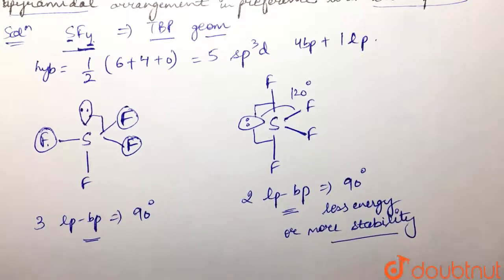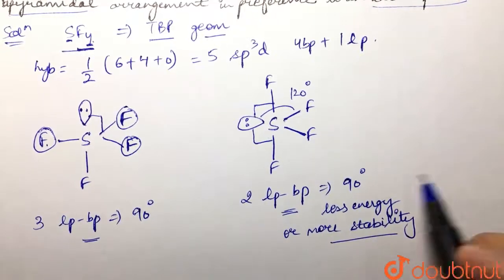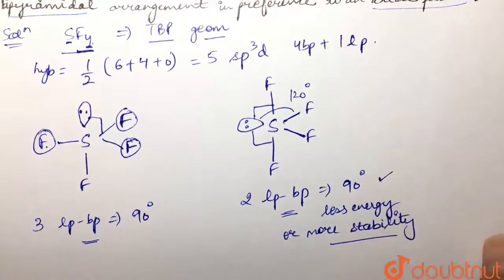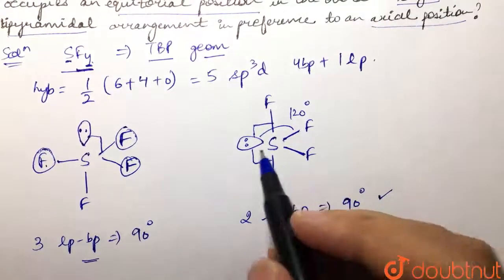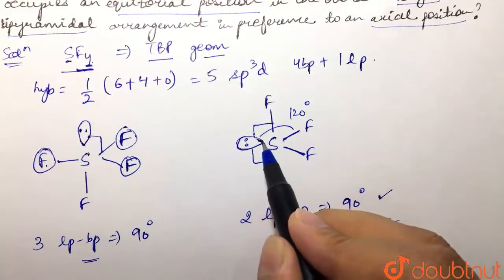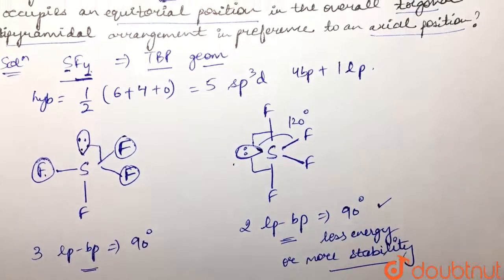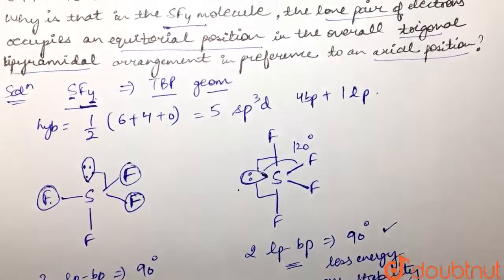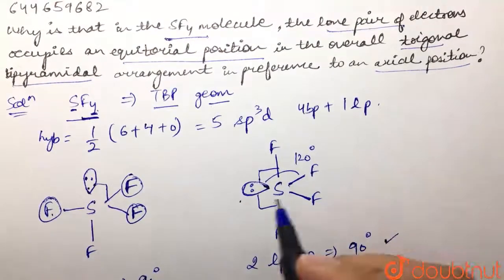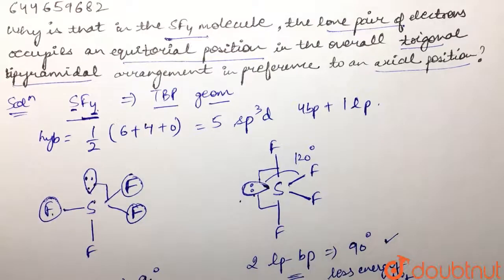This structure would be definitely more stable due to lesser repulsions. That is why our lone pair is occupying the equatorial position instead of axial position. That is why SF4 has a lone pair present at equatorial position rather than axial position.